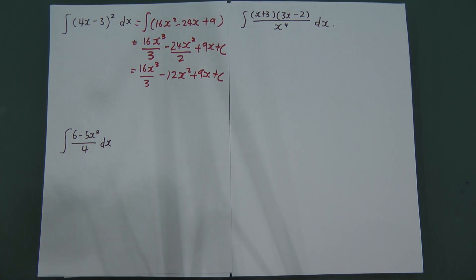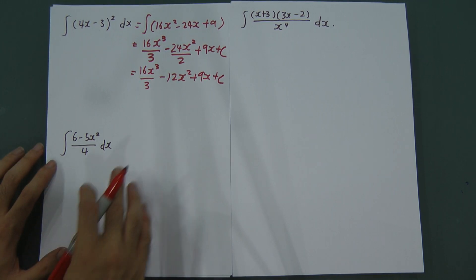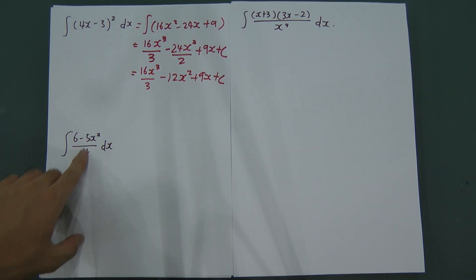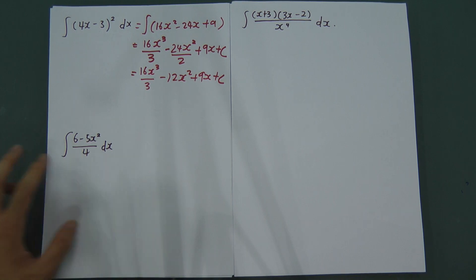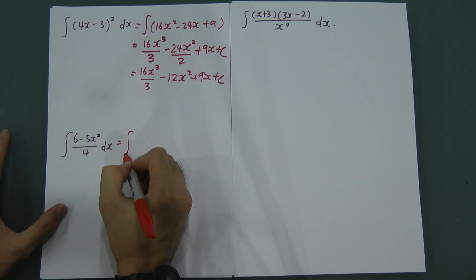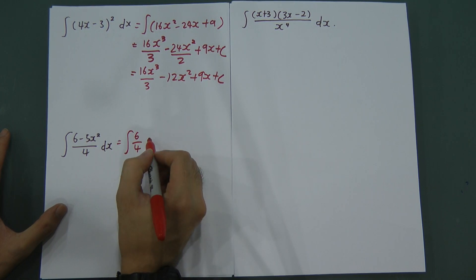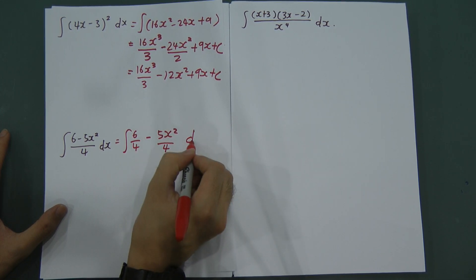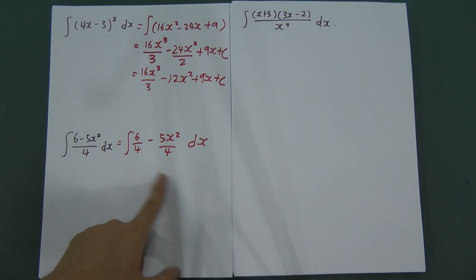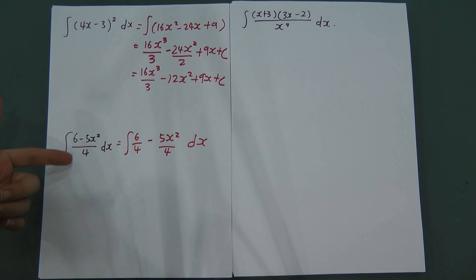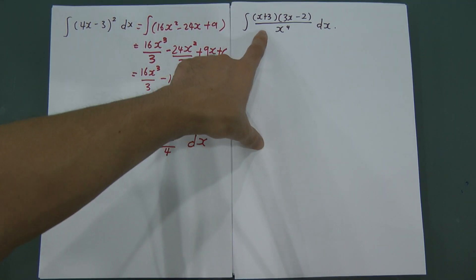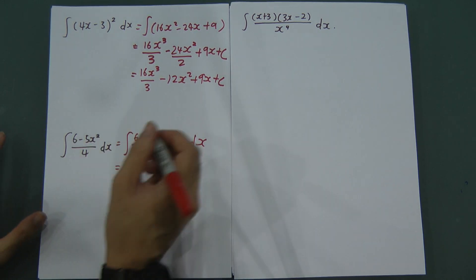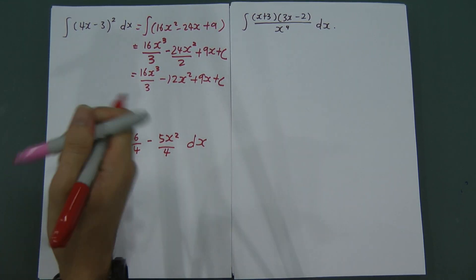For the second example, when you have this kind of fraction, you must split it up. I integrate 6/4 minus 5x²/4 dx. If you split it up, you'll find it's much easier to integrate. When you see a fraction, if possible, try to split it up like this.